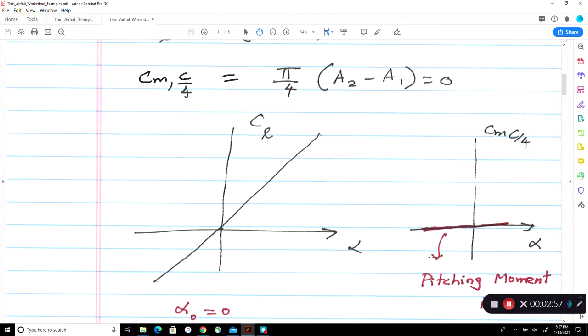Therefore we get a behavior that passes through the origin like this, and the pitching moment here is zero. In our course, we refer to a report by Abbott and Doinhoff. So if you look at a symmetric aerofoil solution from Abbott and Doinhoff that report, if you find that the curve passes through the origin as we expect, and the pitching moment more or less is constant and zero in this case. Notice that it's independent of alpha. So the quarter chord is the center of the aerodynamic center, but the magnitude for a symmetric aerofoil, this works out to be zero also.